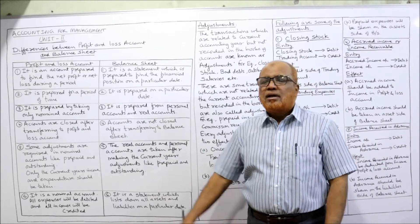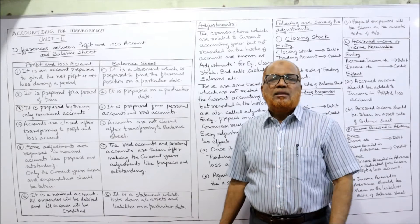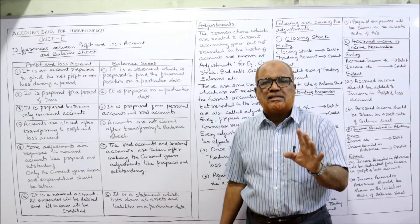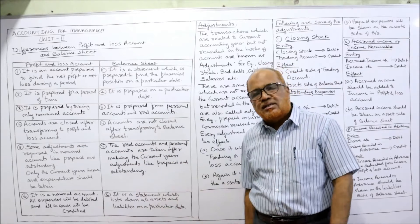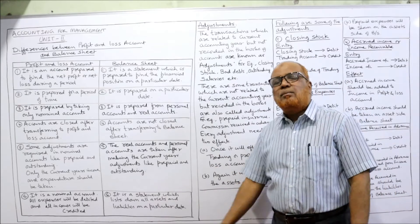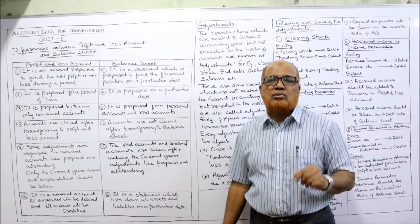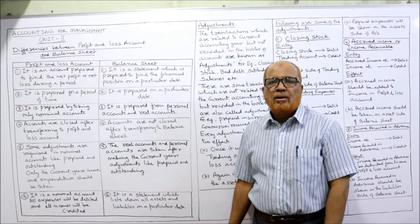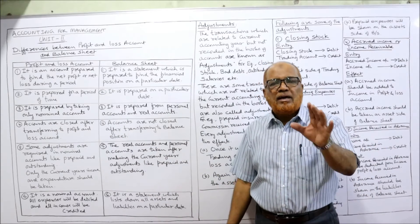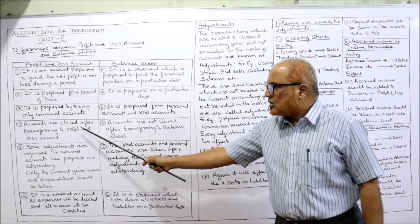Third difference — types of accounts used. We have three types of accounts: personal account, real account, and nominal account. The profit and loss account contains only nominal accounts — accounts of expenses, losses, incomes, and gains. Whereas in the balance sheet we take personal and real accounts, not nominal accounts. All nominal accounts are closed by transferring to the profit and loss account; the remaining real and personal accounts go to the balance sheet.